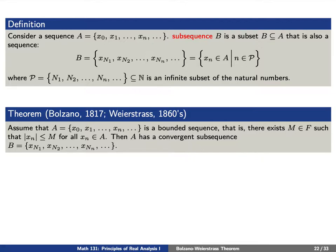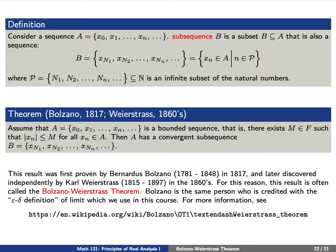There's a celebrated theorem by Bolzano-Weierstrass that goes as follows. Assume that we have a bounded sequence, that is each term x sub n in absolute value is less than or equal to M. Then this sequence has a convergent subsequence. That is, we can pull out terms x sub Nn and this subsequence will converge. This result was first shown by Bernardus Bolzano in 1817 and later discovered independently by the German mathematician Karl Weierstrass in the 1860s. Notably, Bolzano is also credited with the epsilon-delta definition of a limit.